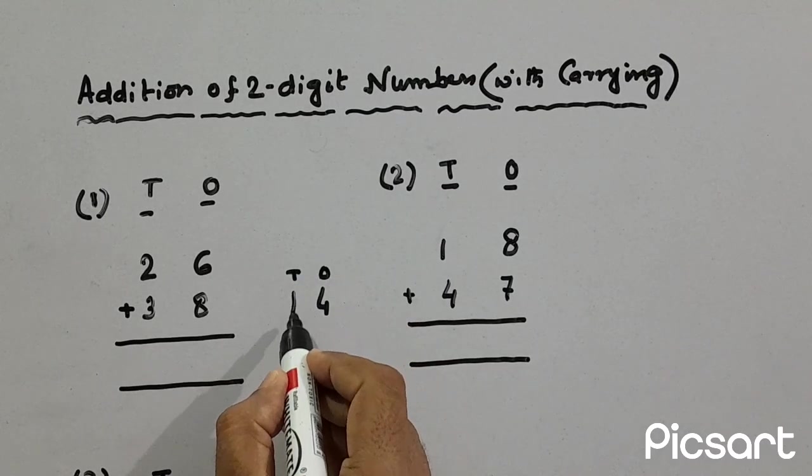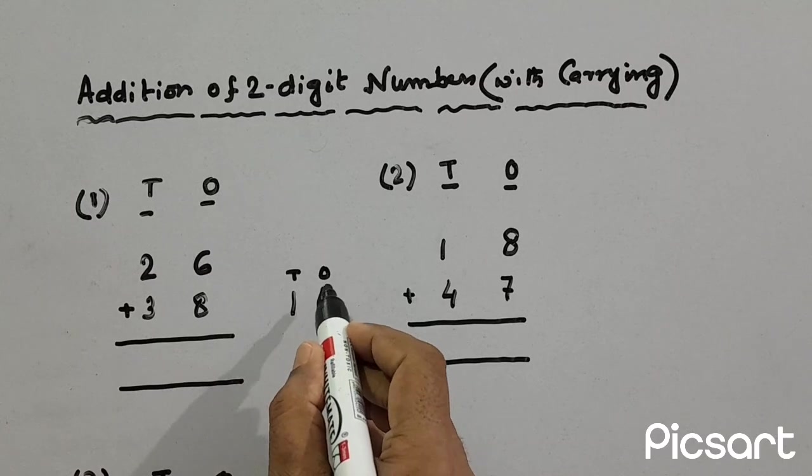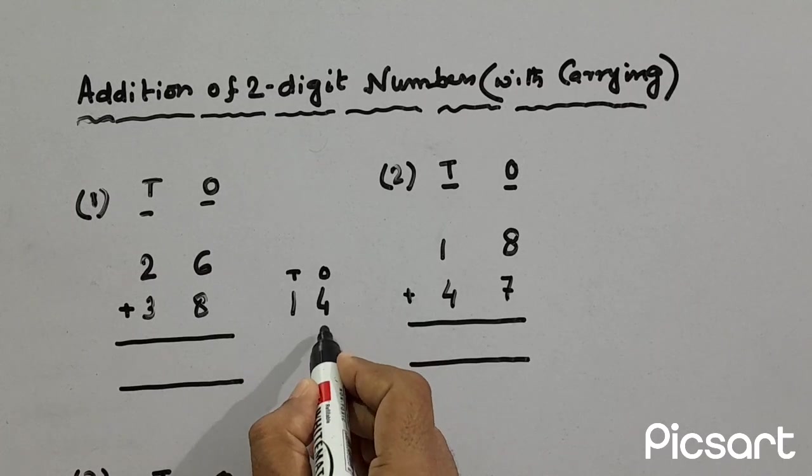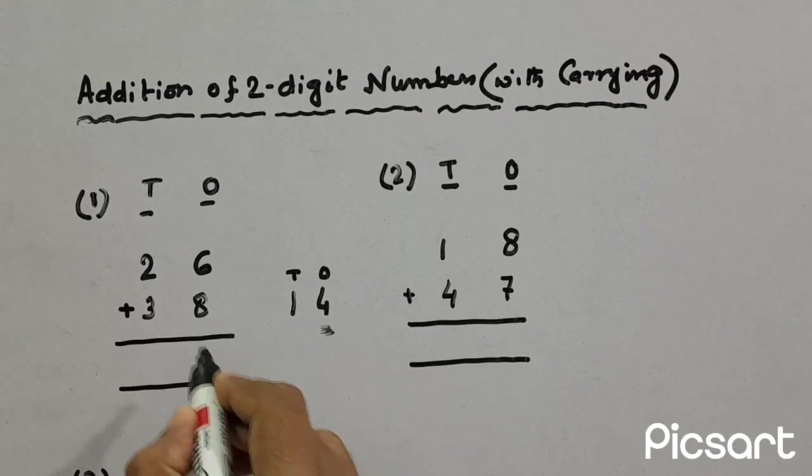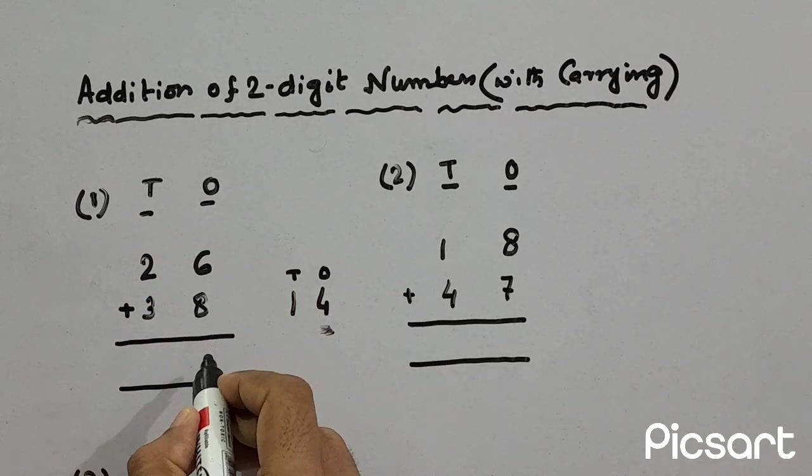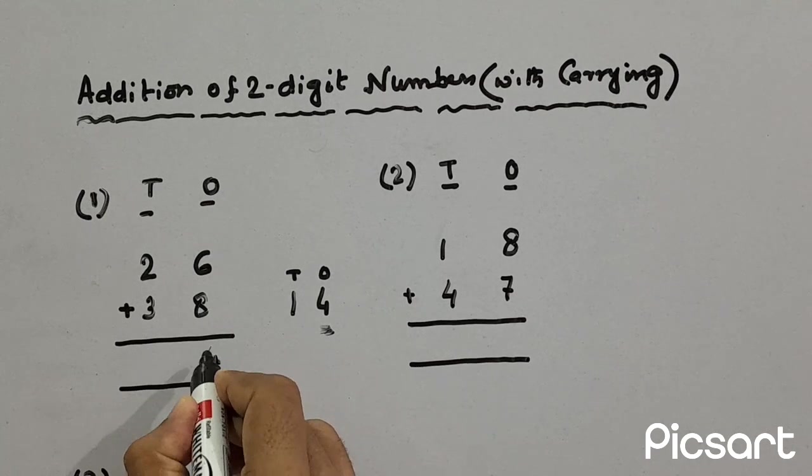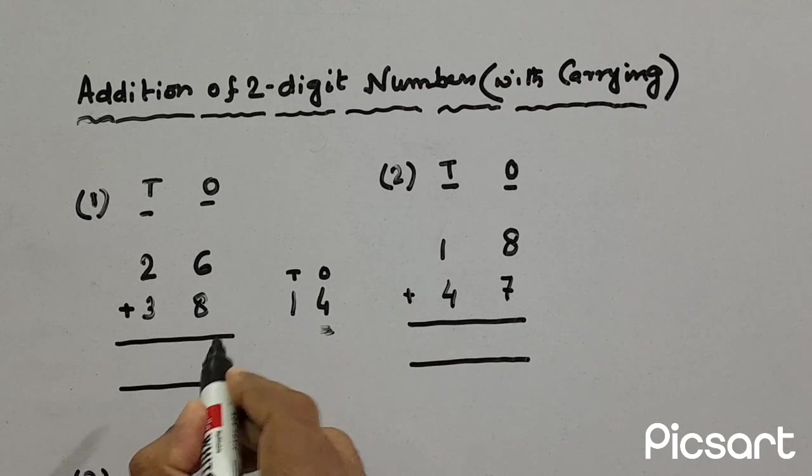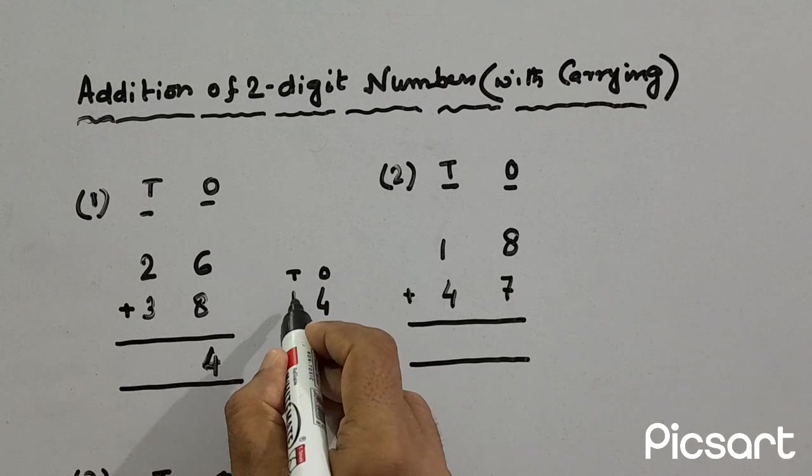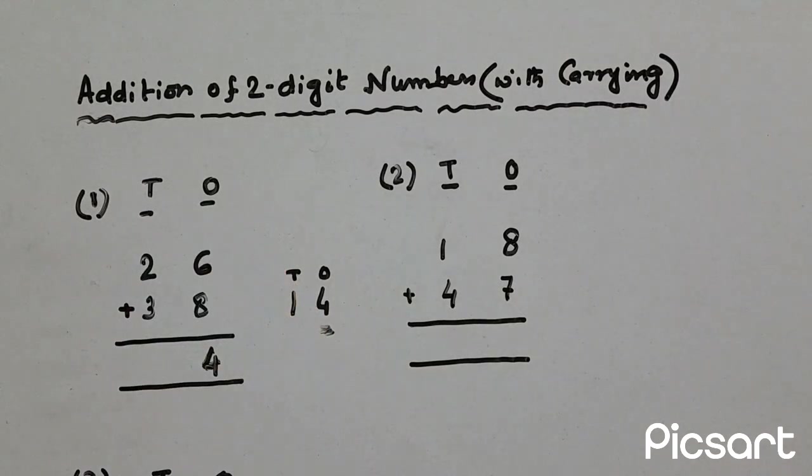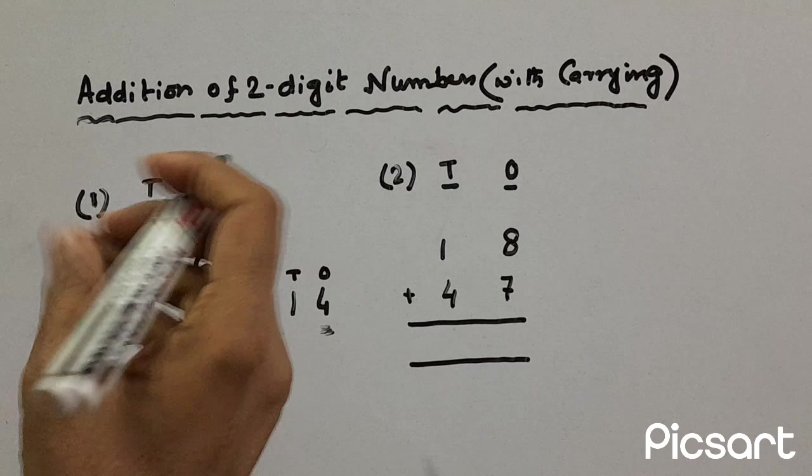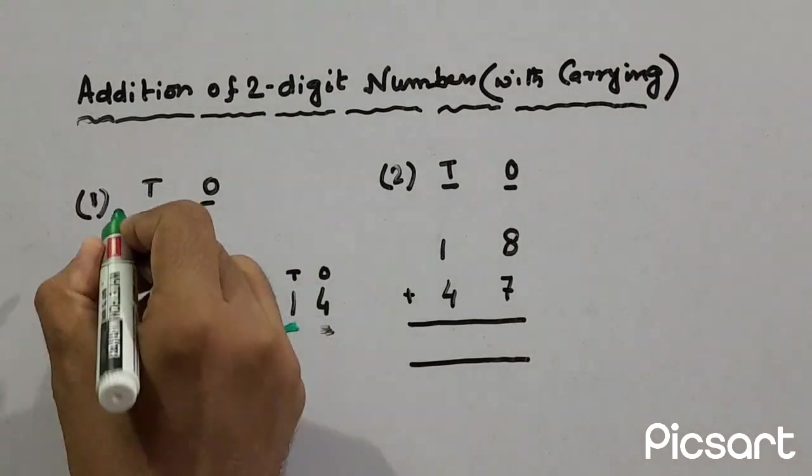Fourteen means one ten and four ones. So we'll put this number under ones column. So here we'll put four and one ten will carry in tens column. So this will bring here.